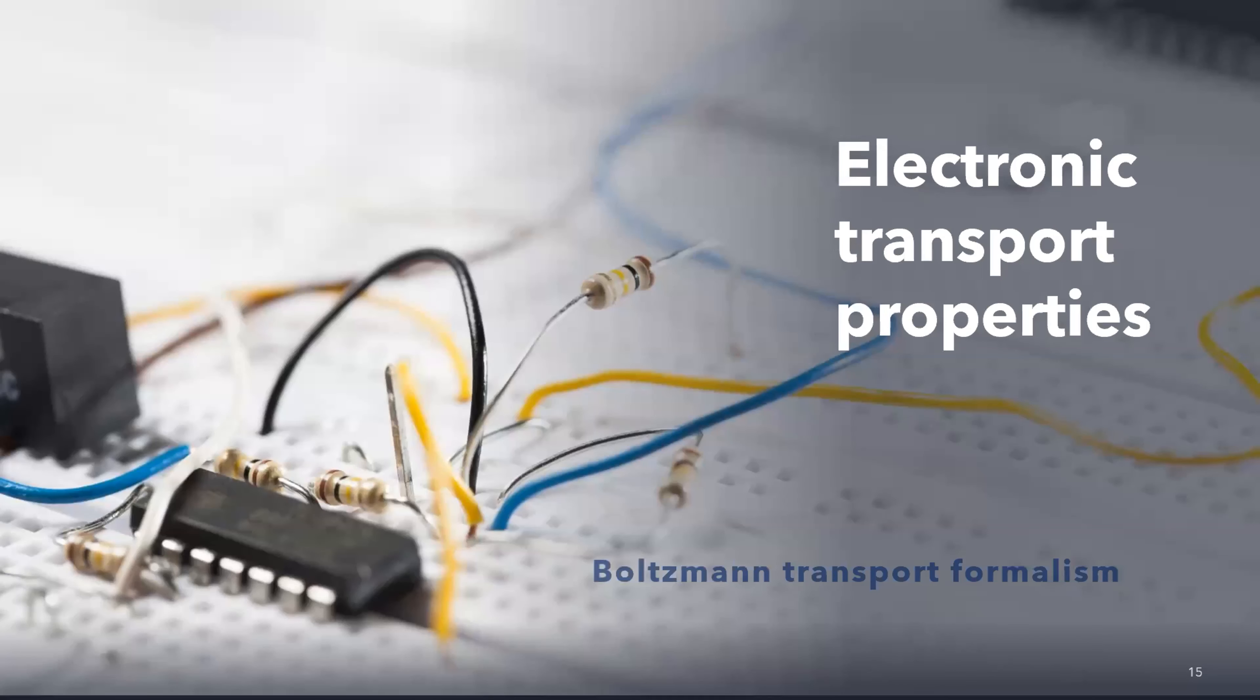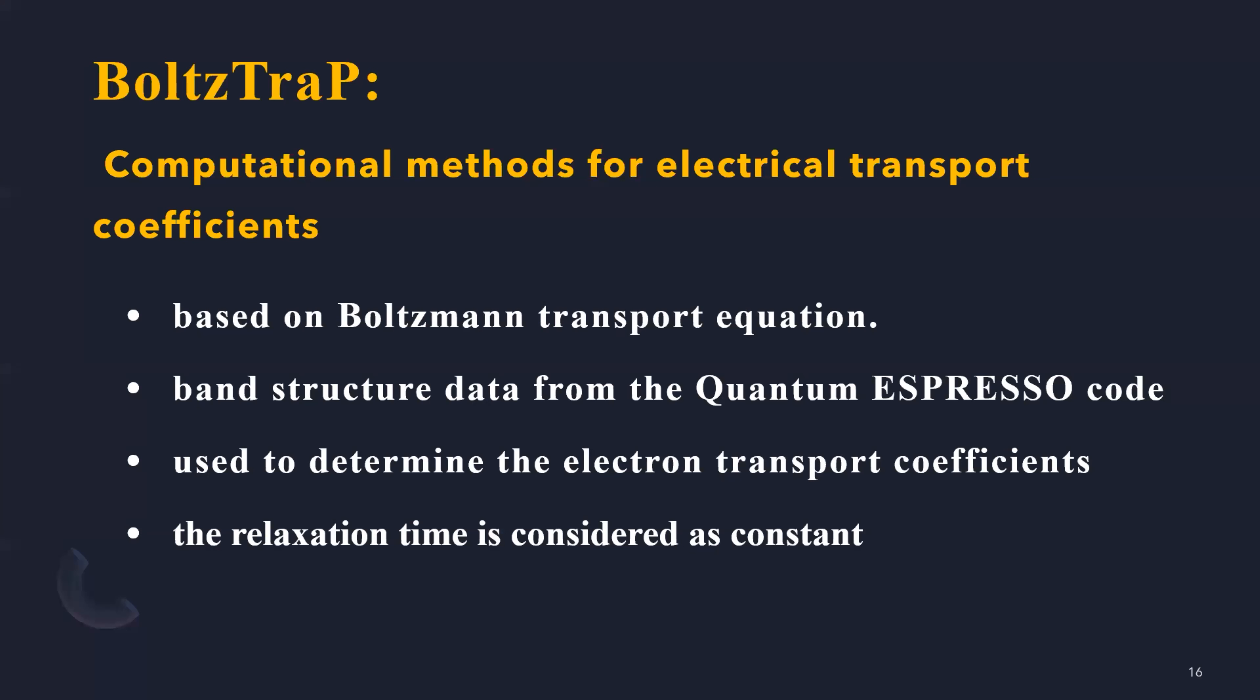The electronic transport properties are also studied for the most materials in different allotropes. We use the Boltzmann transport formalism implemented in BoltzTraP. This code, based on Boltzmann transport equation, using the band structure from the quantum espresso code, is used to determine the electron transport coefficients, such as the Seebeck coefficient, the electrical conductivity, the thermal conductivity. In this code, the approximation used is the constant time relaxation.